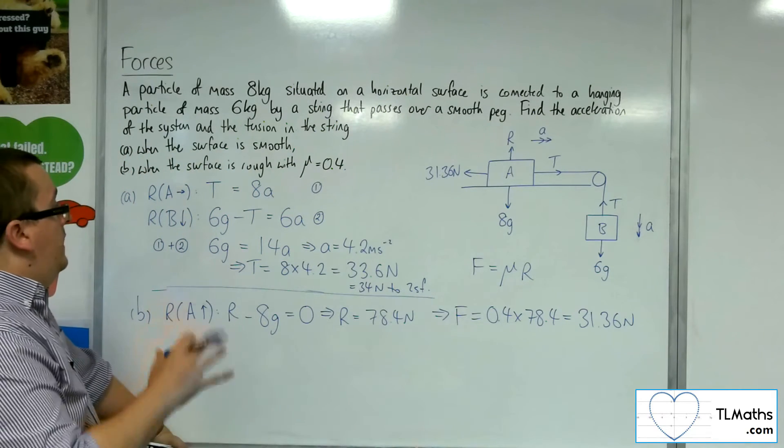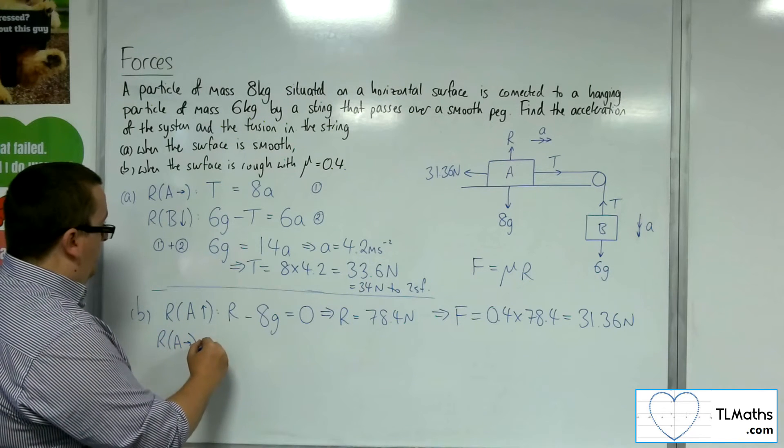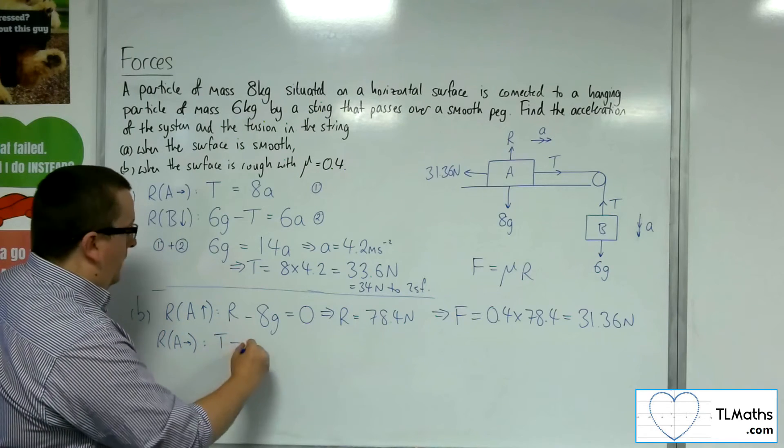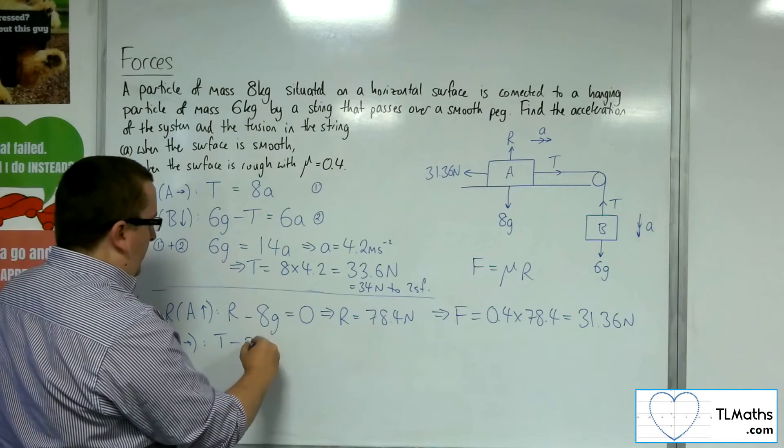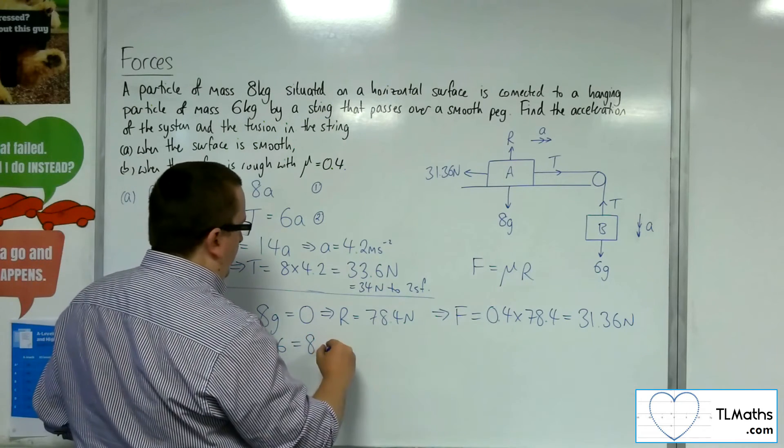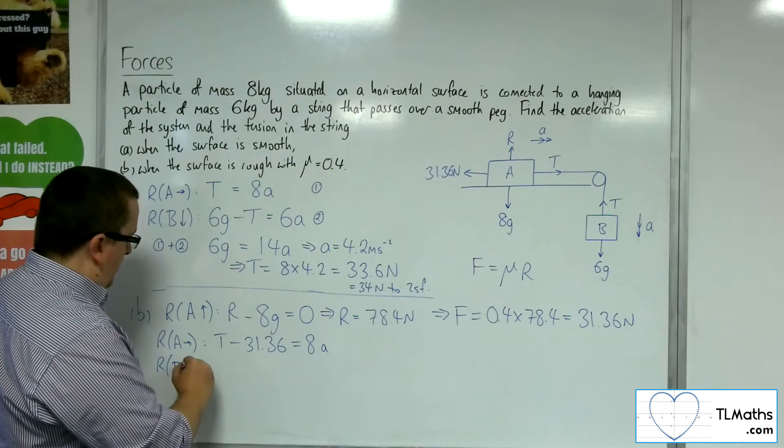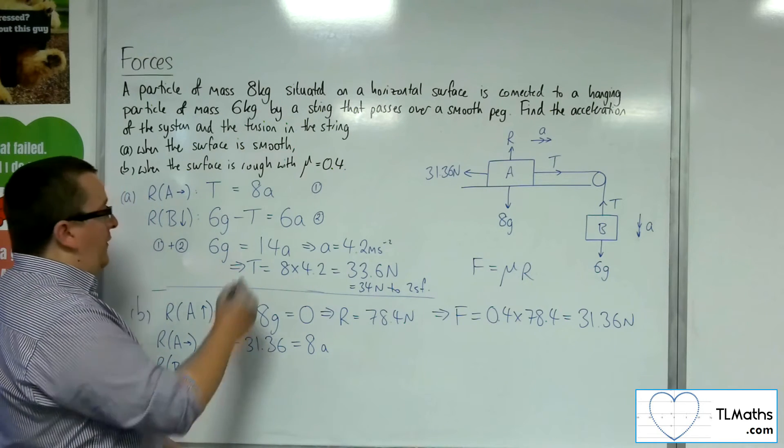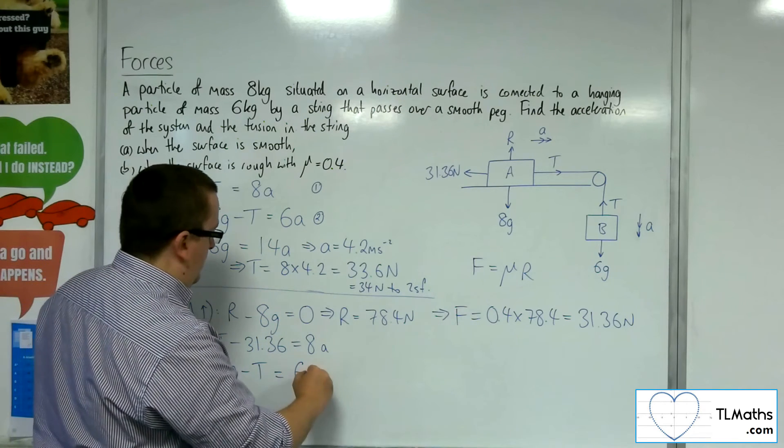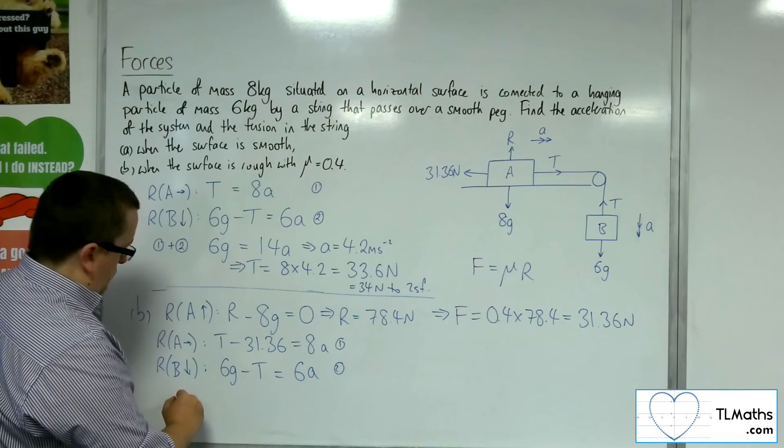So, in that case then, when I resolve A horizontally, this time, I've got the tension, but then I've got the 31.36 working against us. And that's got to be equal to the mass times the acceleration. And if I resolve B vertically, going downwards, we get the same equation that we had before, 6g minus t is equal to 6a. So now if I add these two equations together, 1 and 2, the t's cancel again.